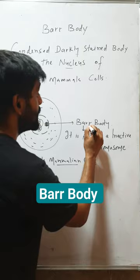This X chromosome becomes very condensed and it becomes inactive, that's why it is darkly stained. So this is called Barr body.